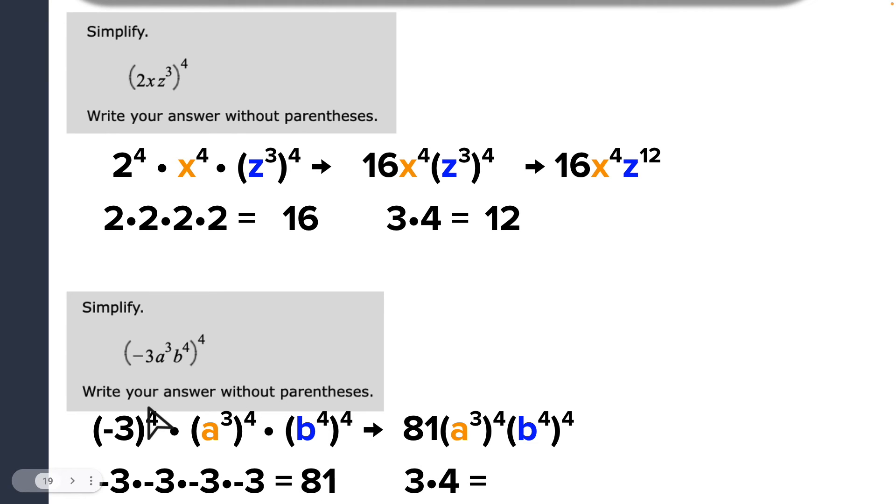So that's the first part there. So that's 81. I've just evaluated the coefficient. And then I'm now going to start evaluating the power on powers. So 3 times 4 for the a. I get 12.